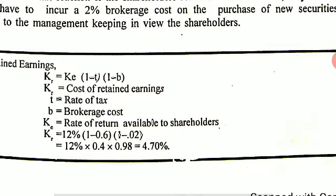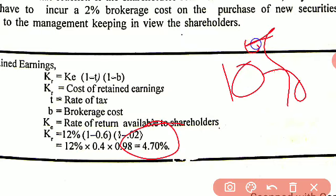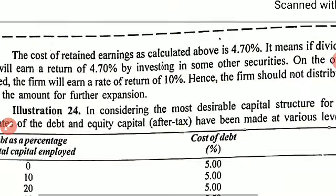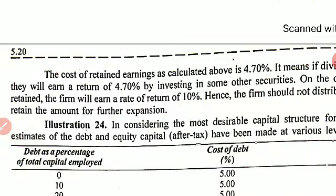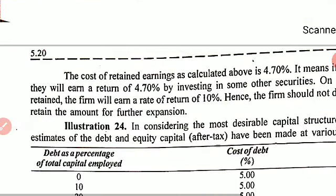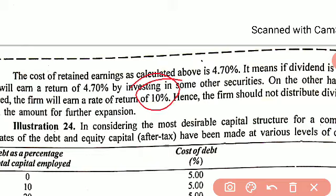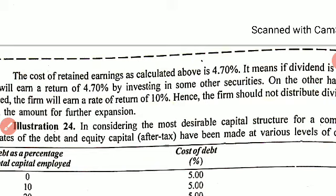Shareholders will be able to earn a rate of return of only 4.7% if dividend is declared. But if dividend is not declared and instead it is retained, their funds will earn at least 10%. The cost of retained earnings calculated is 4.7%, meaning retention — yielding 10% — is beneficial for shareholders.